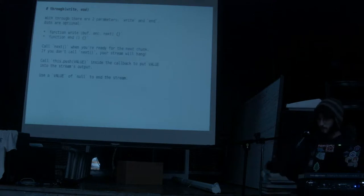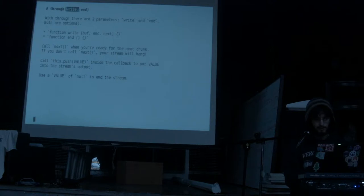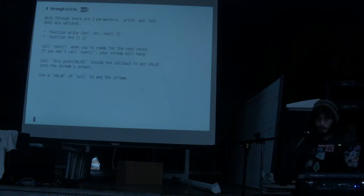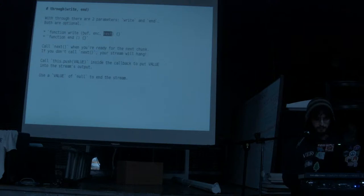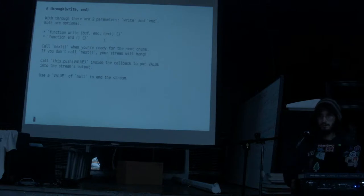Here's a little more in depth about how through works. You get a write function and an end function — both are optional. In our example, we only had a write function. That's a function that takes a buffer, an encoding, and a next callback. You can call those whatever you want. The end function fires when the input stream has finished.